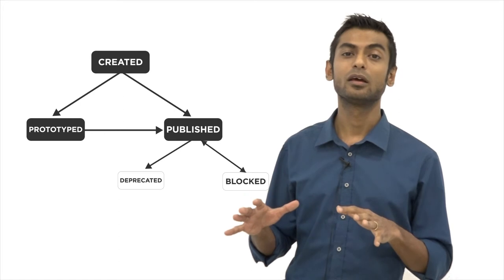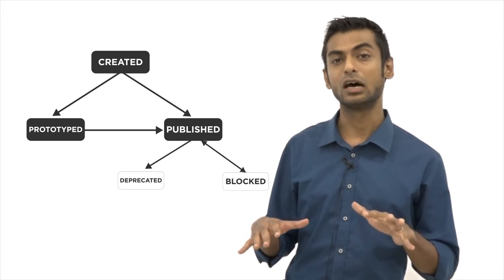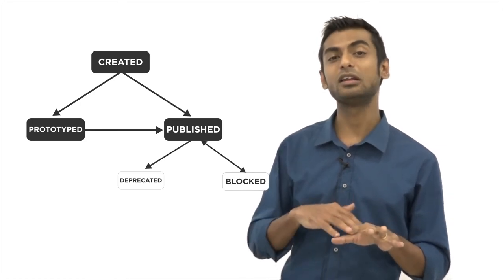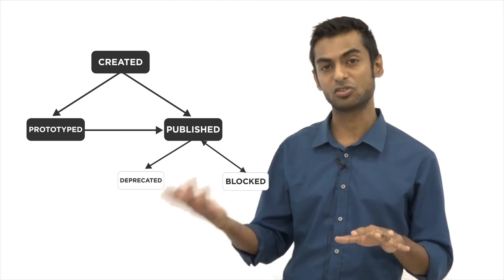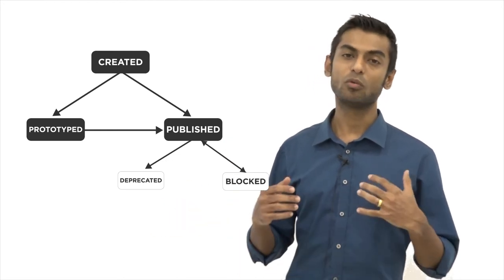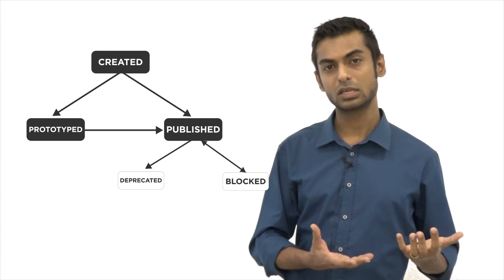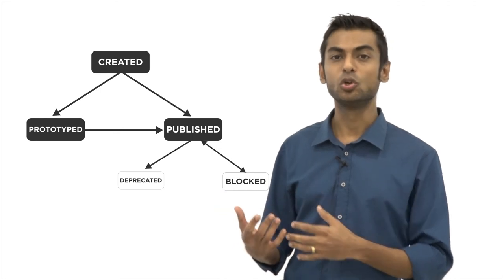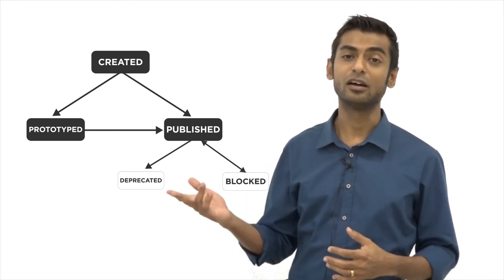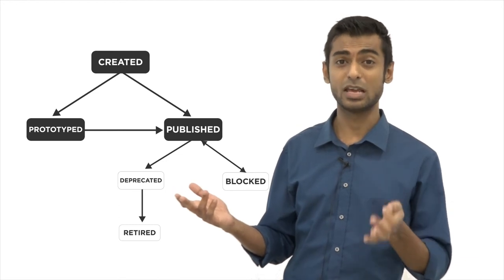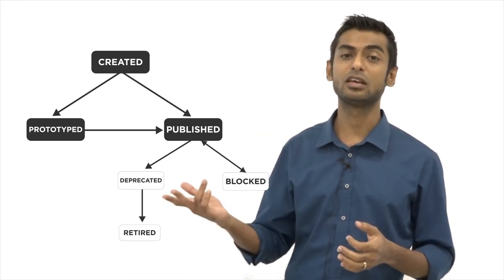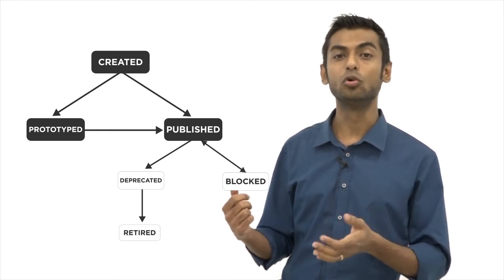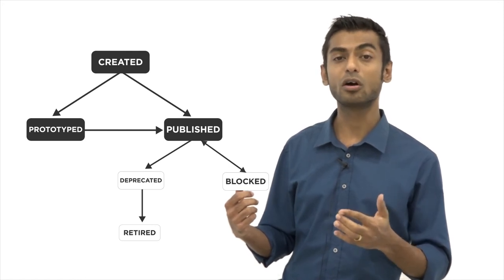So this way existing users can still use that deprecated version of your API until they finally migrate their applications to use the latest version of your API. So finally when all your users have migrated their applications to start using your latest API version you can actually retire your deprecated API. And so when it moves to the retired state of the lifecycle the API is no longer visible to end users and it's no longer invokable.